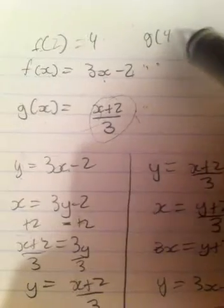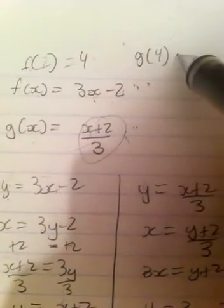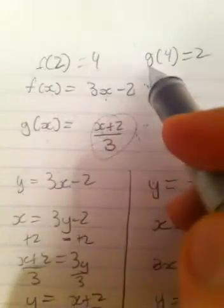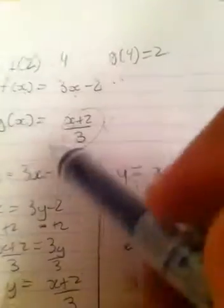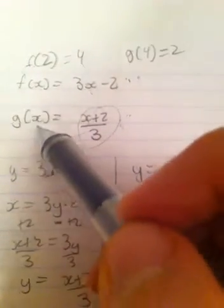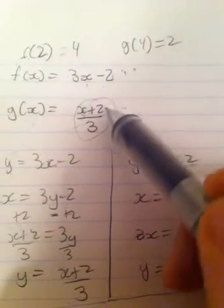Now, if I plug in 4 into g of x, I better get 2, because f of 2 is 4, and we know that they're inverse functions, that means that g of 4 is going to equal 2. g of 4, 4 plus 2 is 6, divided by 3 is 2.